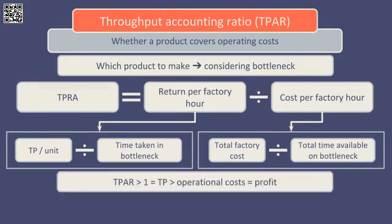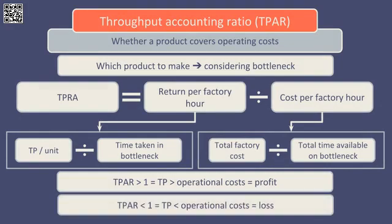If the throughput accounting ratio is greater than 1, then throughput is greater than operating costs and a profit will be made. If the throughput accounting ratio is less than 1, then operating costs are higher than throughput and a loss is made. Clearly where a loss is made we would not want to make this product. Where more than one product has a throughput accounting ratio of greater than 1, products would be ranked from the highest ratio to the lowest and the production plan would be based on this ranking.